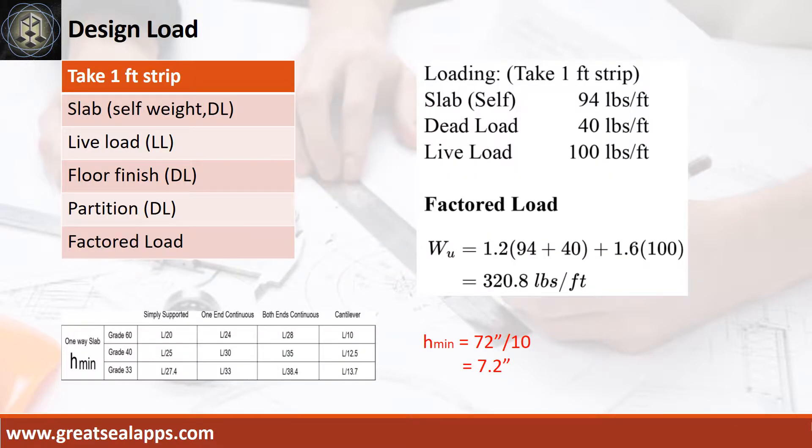The uniform load for 7.5 inches thick slab is 94 pounds per foot. A commercial live load is 100 pounds per foot. Other dead load like floor finish and partition is 40 pounds per foot, for a total factored load of 320.8 pounds per foot.